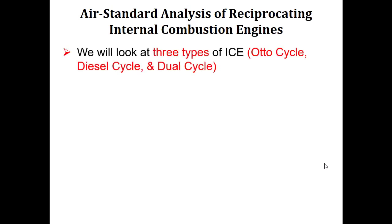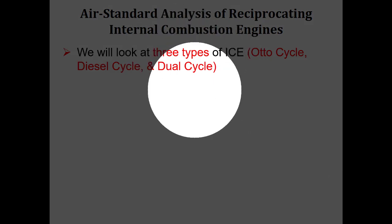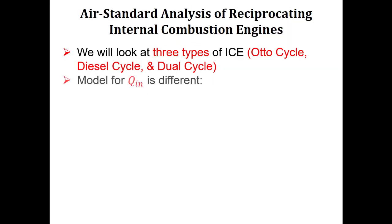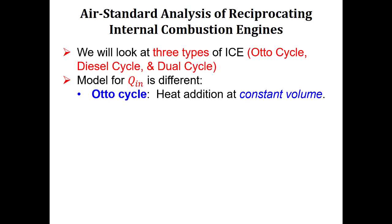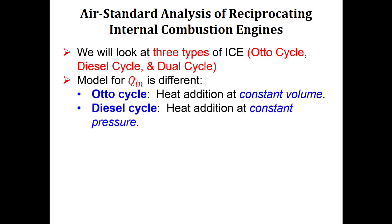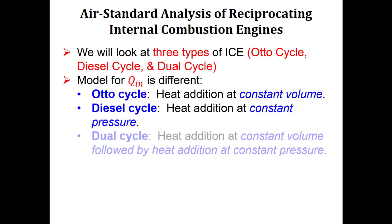We'll analyze three types of ICE cycles: Otto cycles (heat added at constant volume), diesel cycles (heat added at constant pressure), and dual cycles (heat added first at constant volume, then constant pressure — a hybrid). Otto cycles are next, then diesel cycles. If you can do both, you can figure out dual cycles. The difference between these cycles is entirely in how we model the heat addition process.